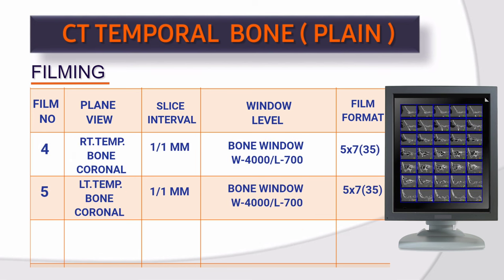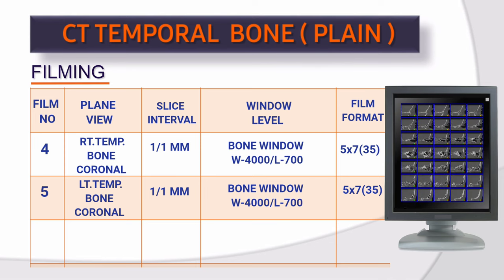Film 4: Plain view, right temporal bone coronal bone. Slice interval 1×1 mm. Window level: bone — window width 4000, window level 700. Film format: 5×7, 35 images.